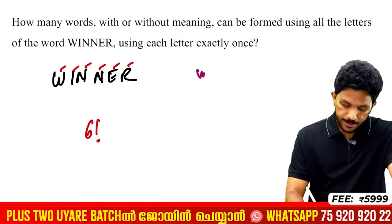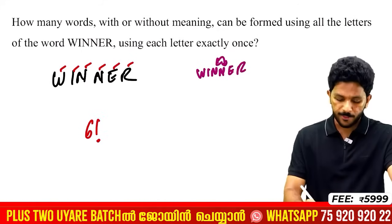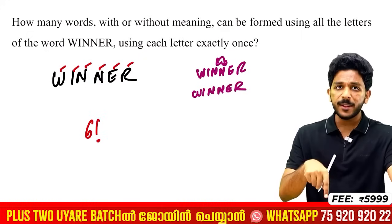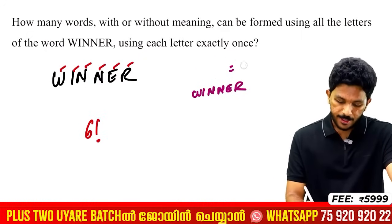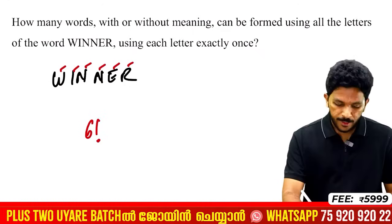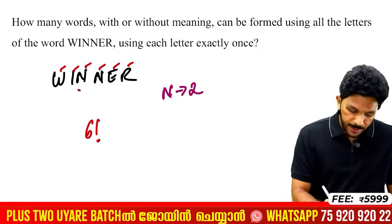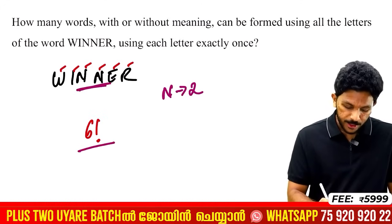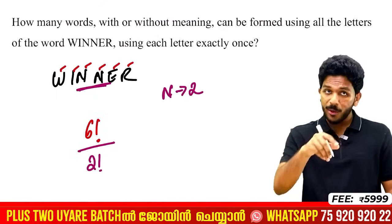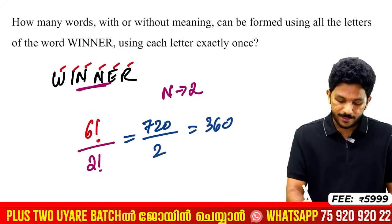Because N is repeated 2 times, we divide by 2 factorial. So 6 factorial is 720, divided by 2 factorial which is 2. The answer is 360. Note that WINNER and WINER are not the same — the repeated N matters.